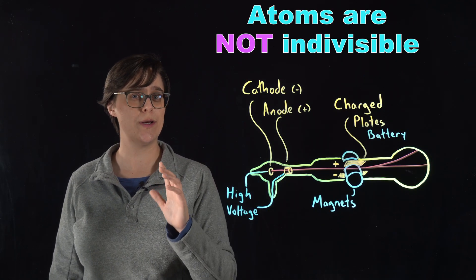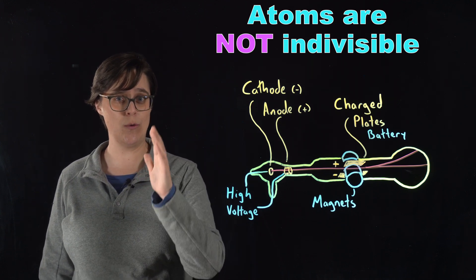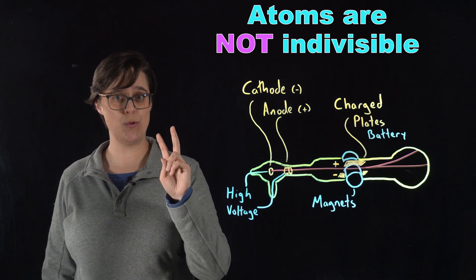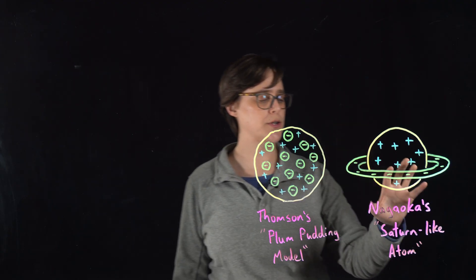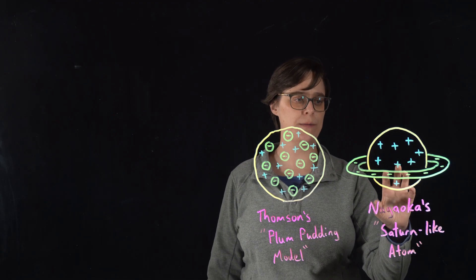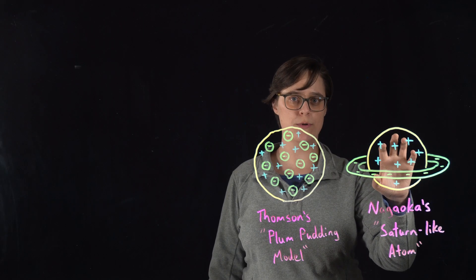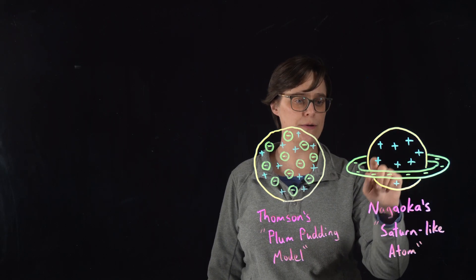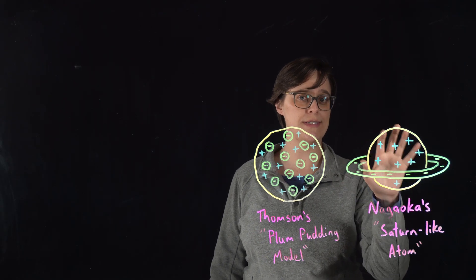If you want a moment to propose your own atomic structure, pause now, because I'm about to show you two competing models from this point in time. From 1903, we have Hontaro Nagaoka's Saturn-like atom. In this model, we have our positively charged portion of the atom in a sphere in the middle and we have a halo of negatively charged electrons outside of it.